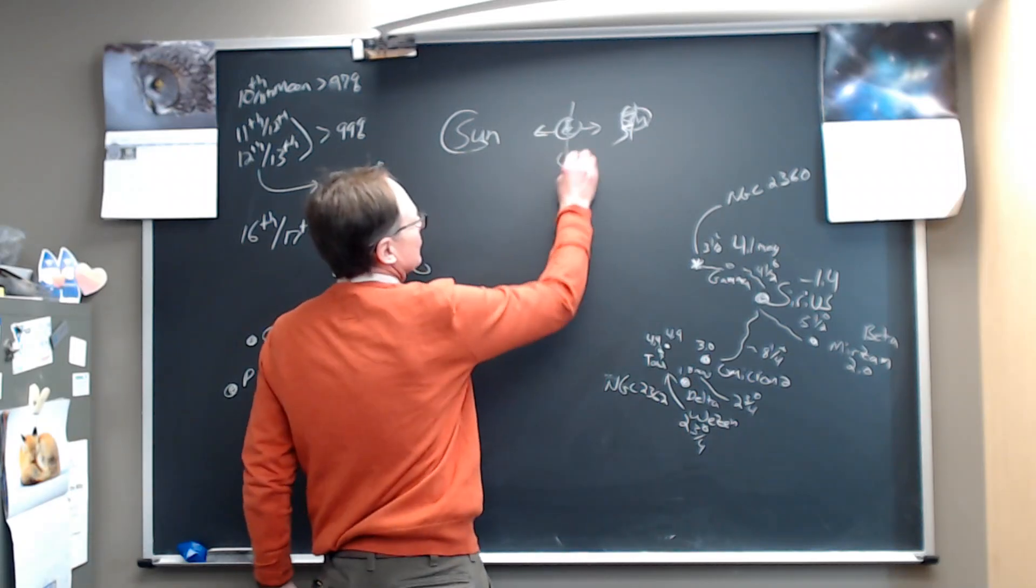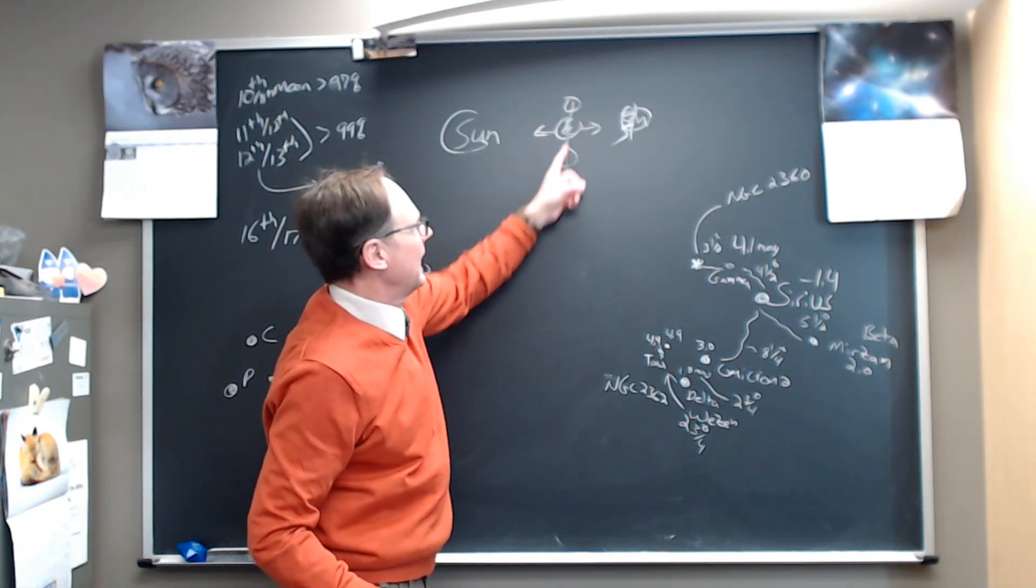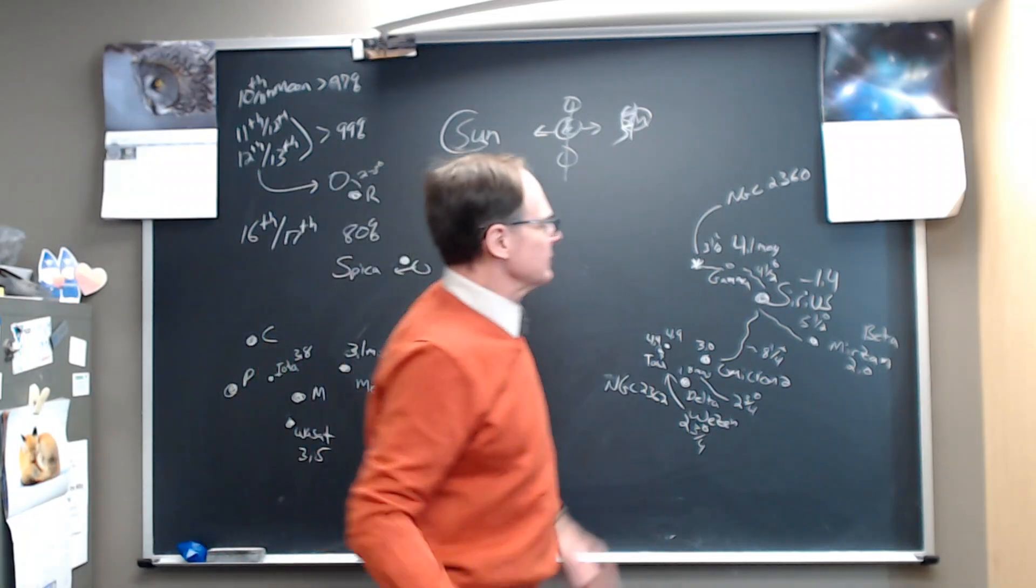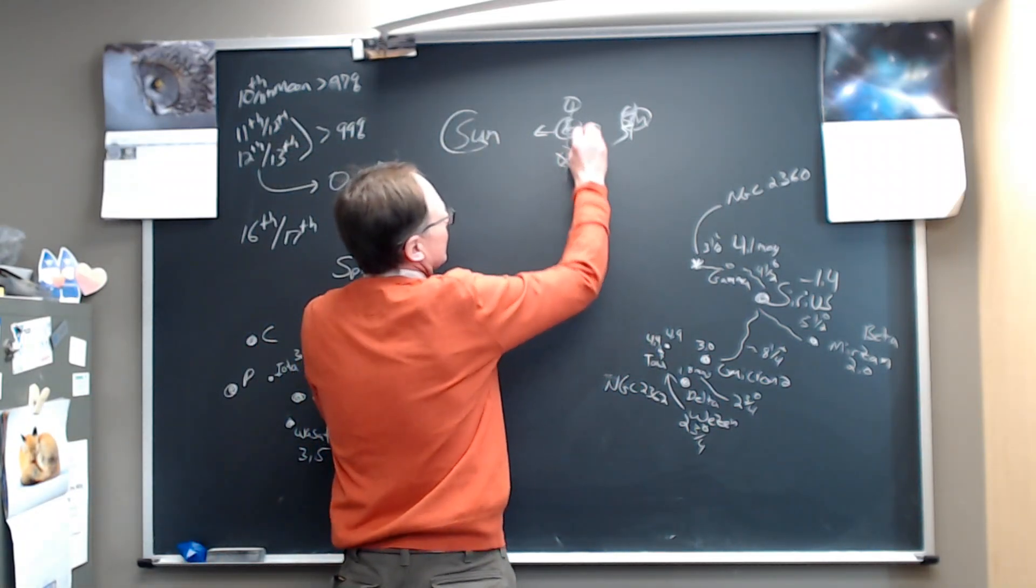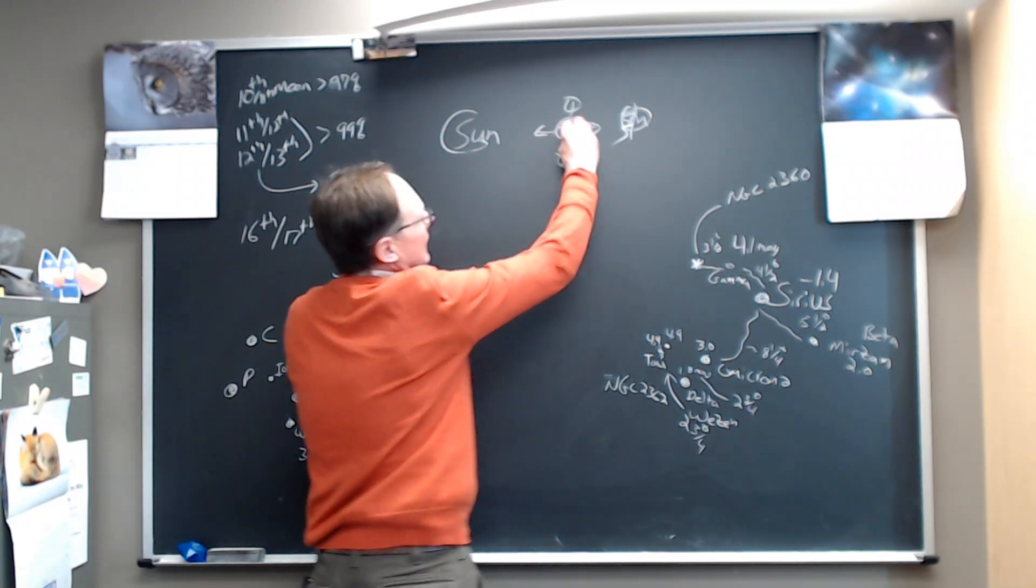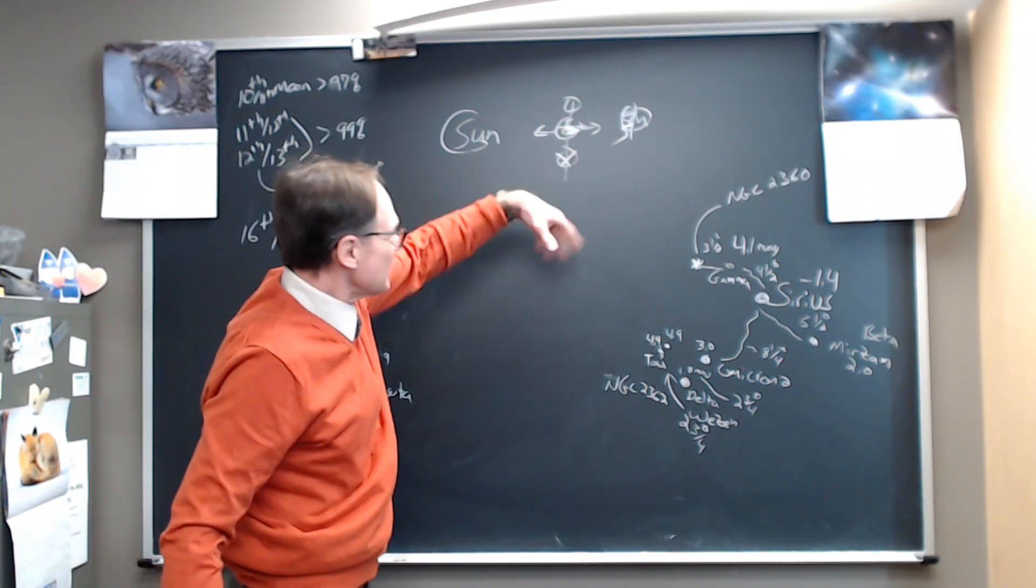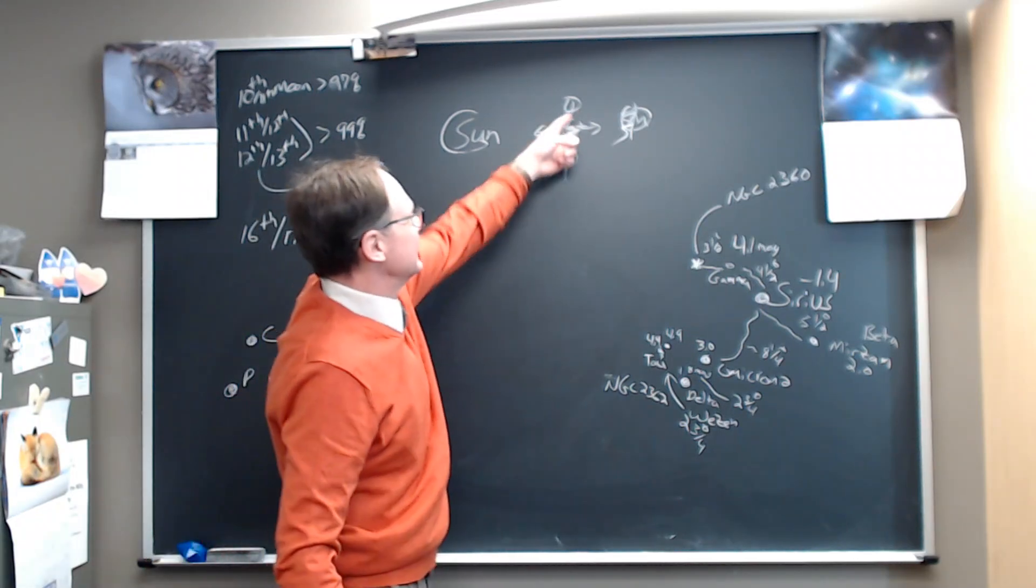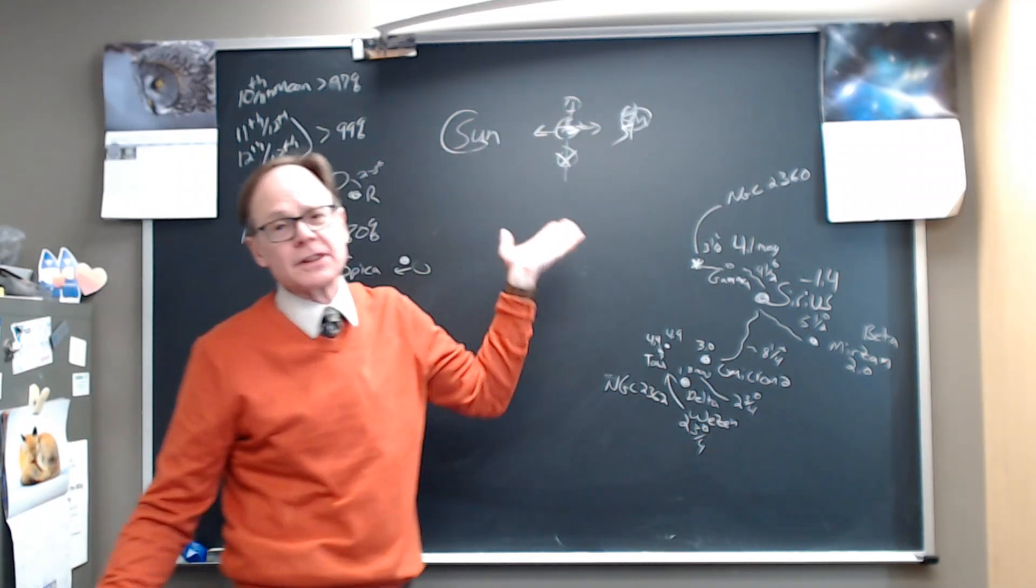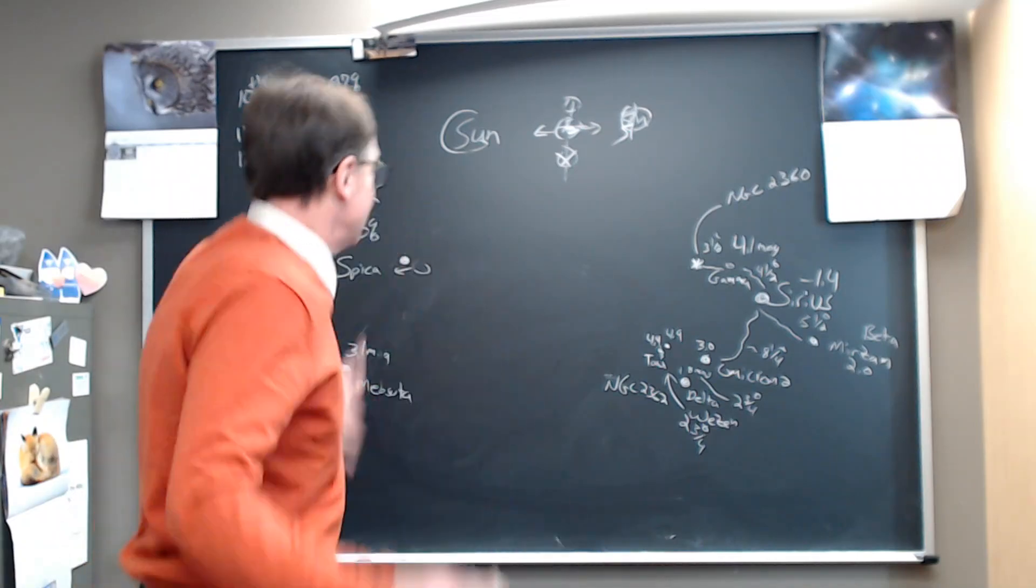Whereas you have these quarter moons, and they're only up half of the night. This moon right here, you can only see from the first half of the night, the first quarter moon. You can only see the first half of the night, and then it sets. The third quarter moon, you see the second half of the night, and that's why you see it in the morning after daylight for a while.